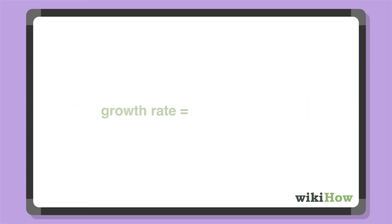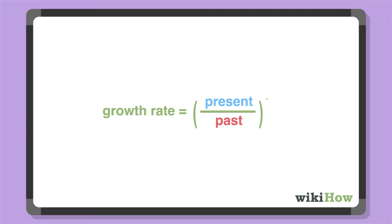Then, use the formula growth rate equals present over past to the 1 over n minus 1, where n is the number of time periods represented by your data.